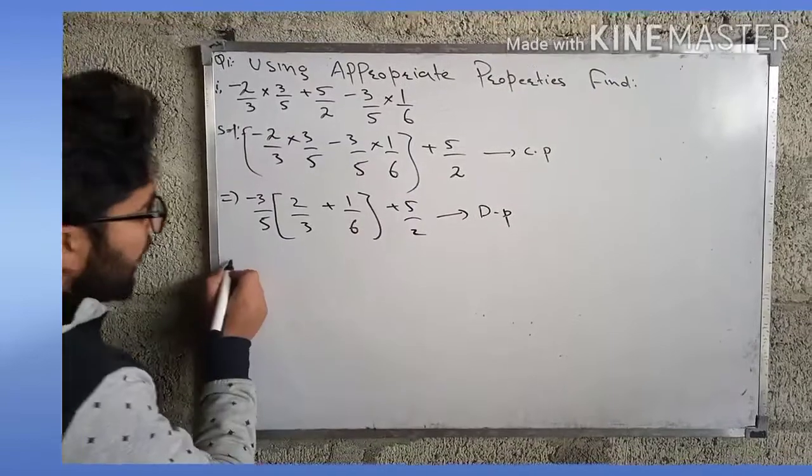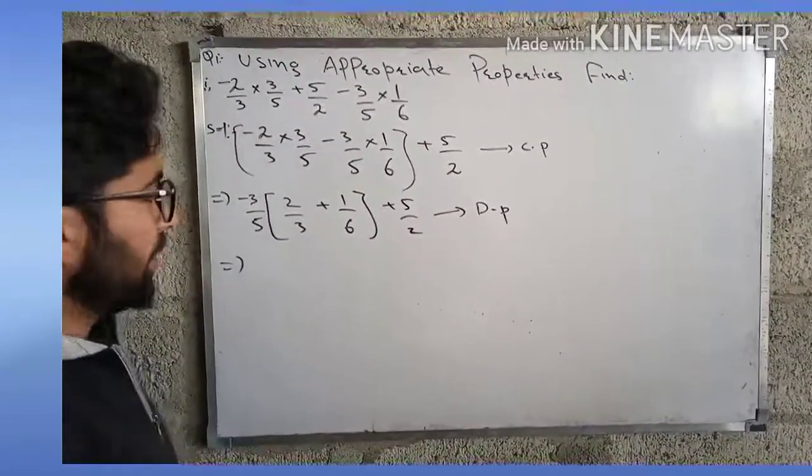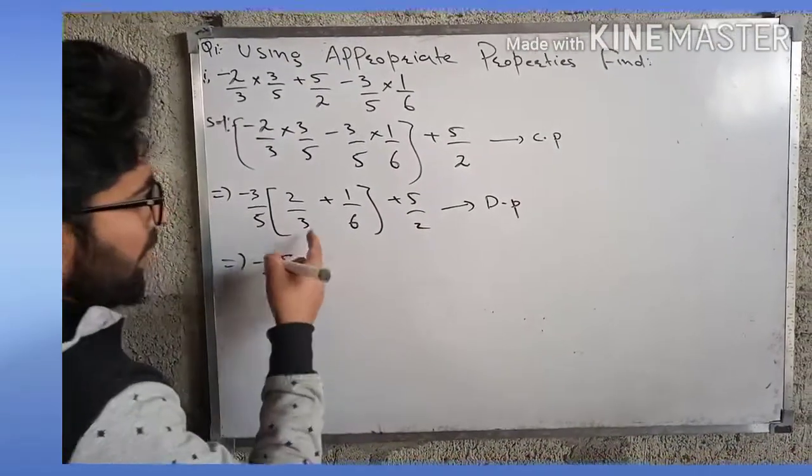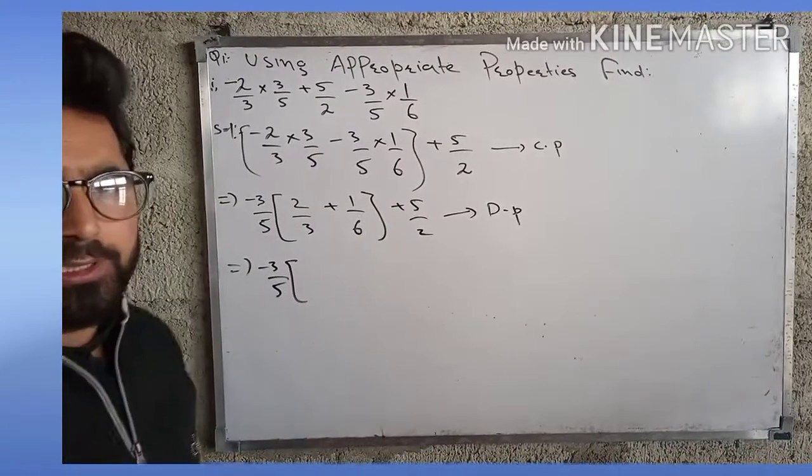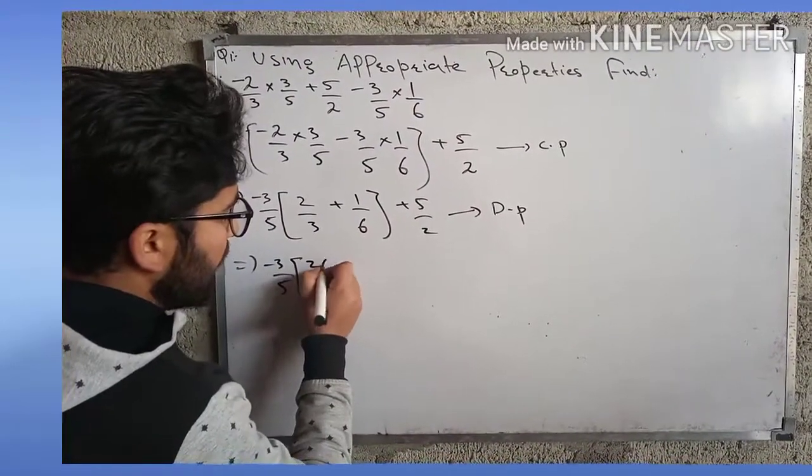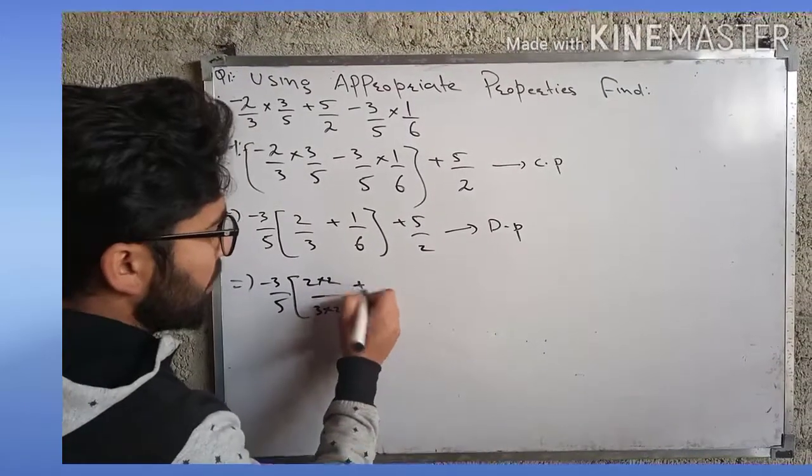We can write it again, so here we have 1 × 1/6 × 1 + 5/2.